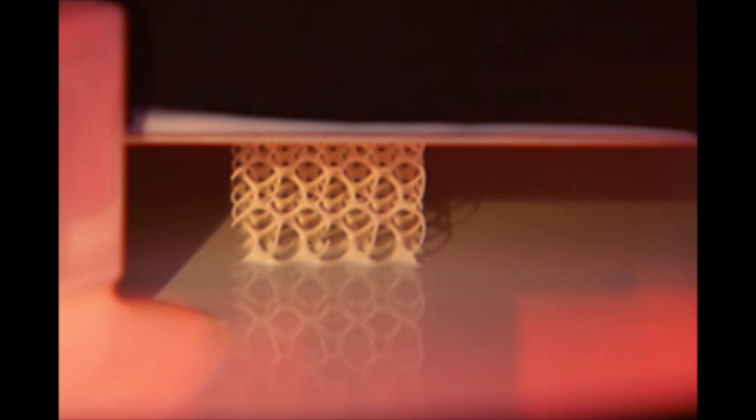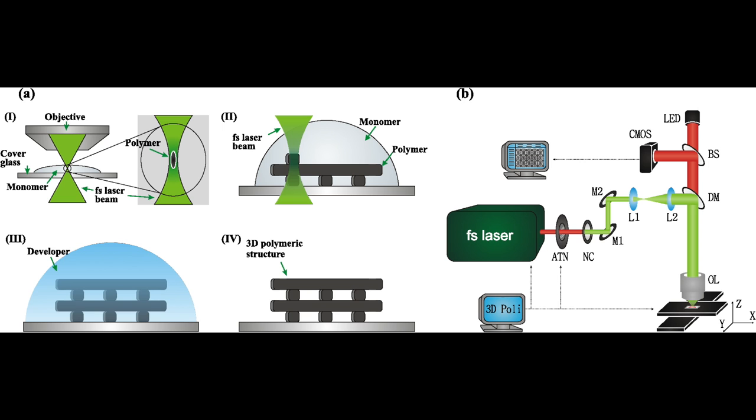Auxetic materials are manufactured using various nanofabrication methods, such as lithography-based ceramic manufacturing, direct laser writing, and DNA manipulation. The properties of this structure can be engineered to fit their desired application.